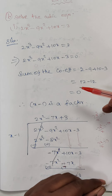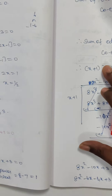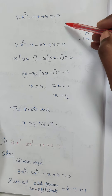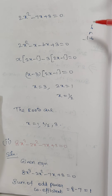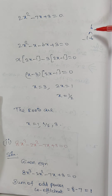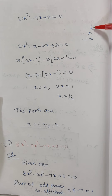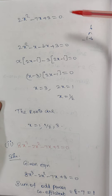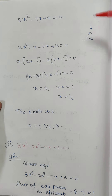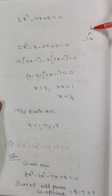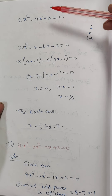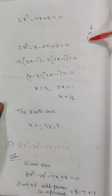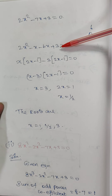Now I am going to solve 2x² minus 7x plus 3 equals 0. Multiply 2 times 3 to get 6. I need to split 6 into two numbers: minus 1 and minus 6, because minus 1 times minus 6 equals 6 and minus 1 plus minus 6 equals minus 7. So I write 2x² minus x minus 6x plus 3.